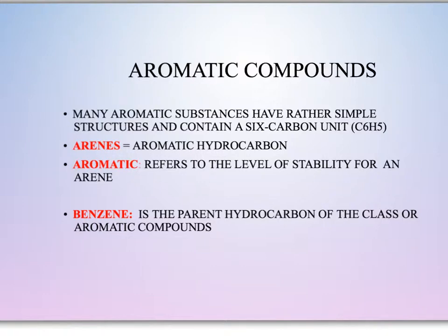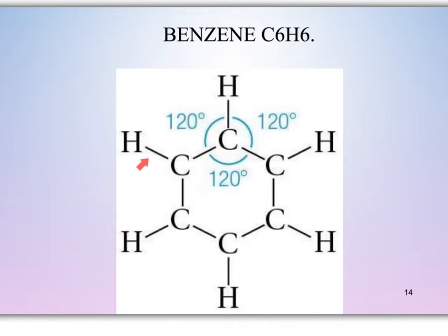Aromatic compounds are the fourth grouping of hydrocarbons. Many aromatic substances have simple structures with only a six-carbon unit known as C6H5. Arenes are aromatic hydrocarbons, and the most common aromatic hydrocarbon we will see is benzene. The benzene structure is an enclosed ring composed of six carbons with a 120-degree angle, and each carbon is attached to a hydrogen. Benzene is known to have a characteristic called resonance.